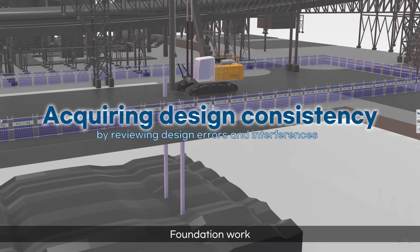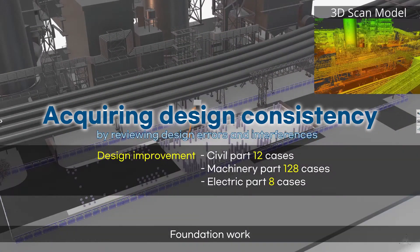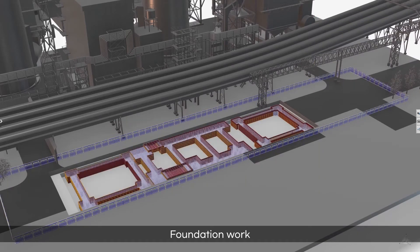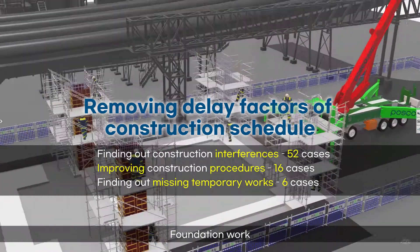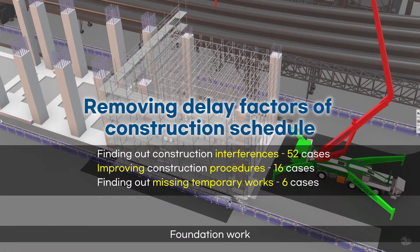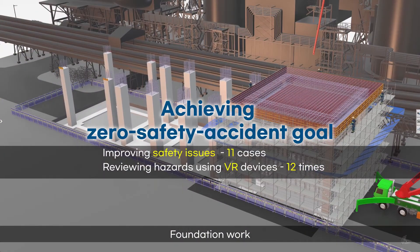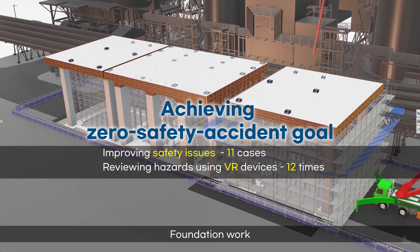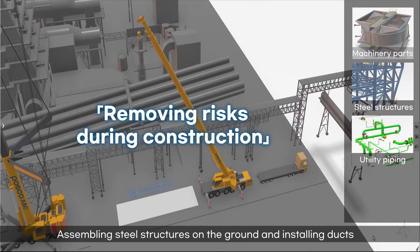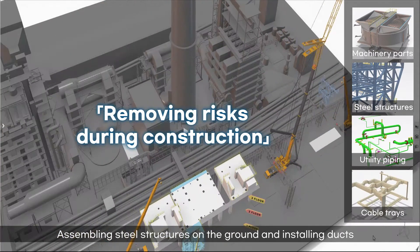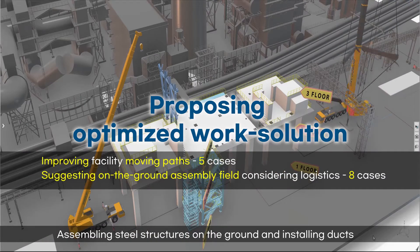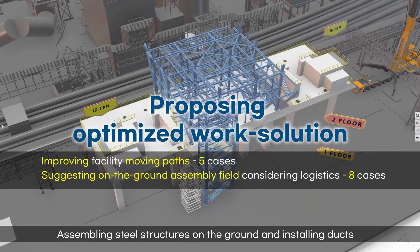We checked design errors and interferences through 3D scanning of new and existing facilities. Through this, we removed delay factors such as missing temporary works and construction errors, and prevented any safety accidents on the construction site. We thoroughly reviewed design consistency and processes to find out risks, so that we could carry out SCR installation work without any delays on civil foundations.